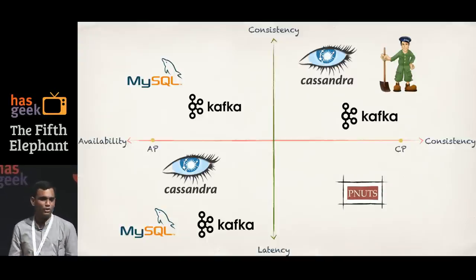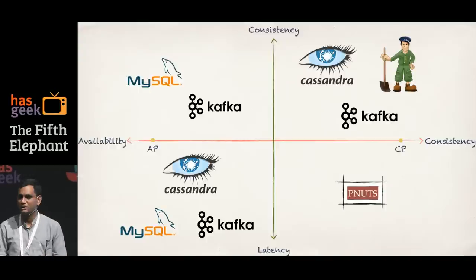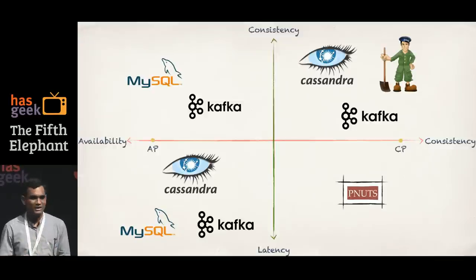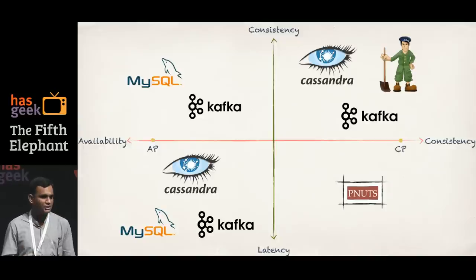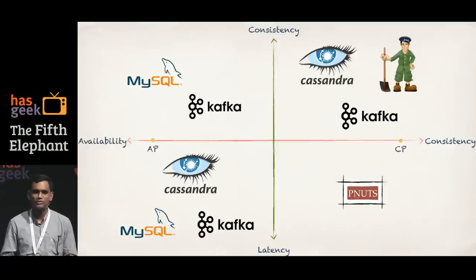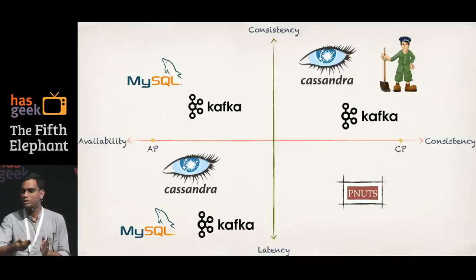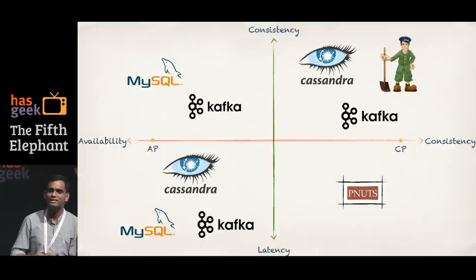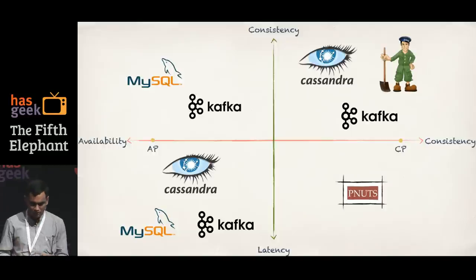This points to a notable aspect of PACELC: unlike CAP, it does not define availability, consistency, or latency in a very precise manner. Many people see this as a flaw. To me, it's actually one of PACELC's biggest advantages — instead of rigidly defining what consistency and availability must mean, it leaves it up to you. It's a framework for analyzing data stores: you talk about the kind of availability, consistency, and latency requirements you have, analyze your data stores accordingly, compare them, and then speak to your business to confirm whether the trade-offs are acceptable.